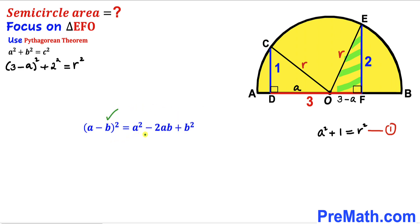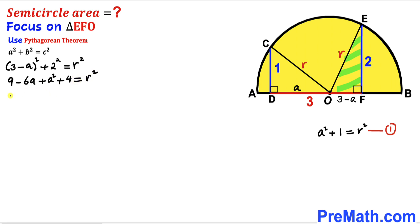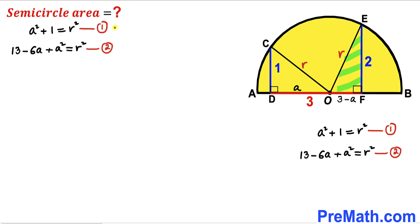Recalling the identity (a − b)² = a² − 2ab + b², we expand the left side to get 9 − 6a + a² + 4 = r². Combining like terms gives 13 − 6a + a² = r². We label this as equation number two.